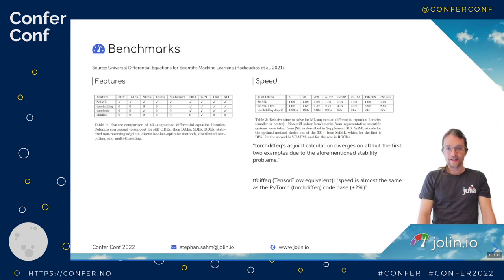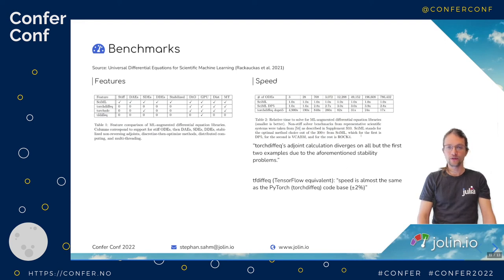Comparing speed, there's also the TensorFlow library — they report performance very similar to Torch. So Julia is really a factor of 30 or even more better than PyTorch or TensorFlow here.